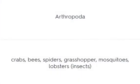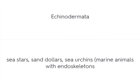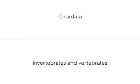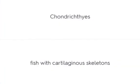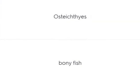Arthropoda includes crabs, bees, spiders, grasshoppers, mosquitoes, and lobsters. Echinodermata includes sea stars, sea cucumbers, and sea urchins — marine animals with endoskeletons. Chordata includes invertebrates and vertebrates. Chondrichthyes are fish with cartilaginous skeletons. Osteichthyes are bony fish.